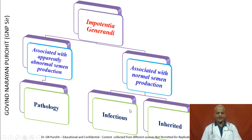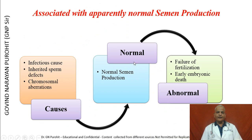Impotentia generandi has been divided into two types: that associated with apparently abnormal semen production, and that associated with normal semen production. The type associated with abnormal semen production relates to pathologies, while that associated with normal semen production could be due to inherited causes or infectious diseases. Today we discuss Impotentia generandi associated with apparently normal semen — infectious causes, inherited sperm defects, and chromosomal aberrations.